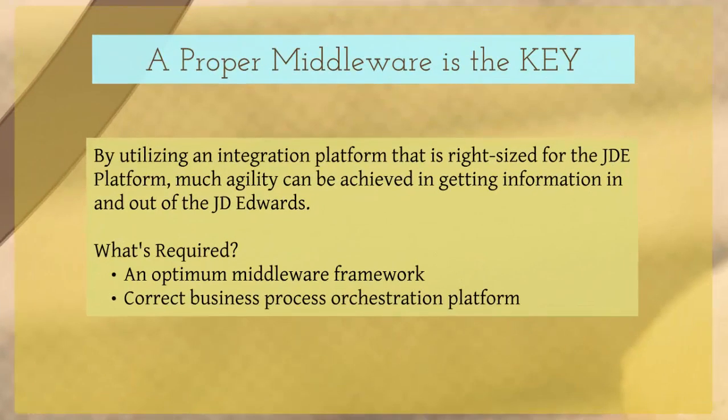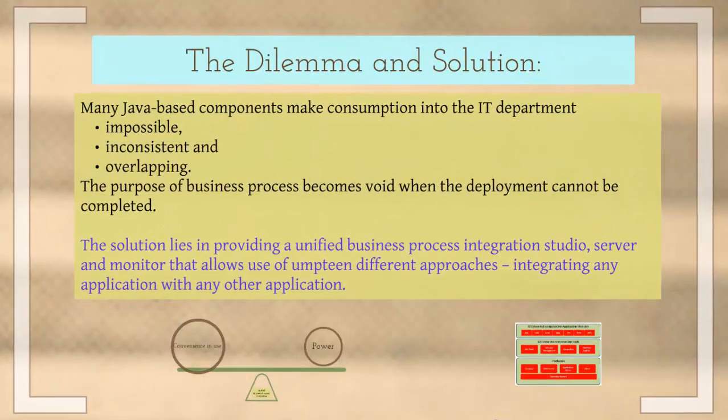By utilizing an integration platform that is right-sized for the JDE platform, much agility can be achieved in getting information in and out of JD Edwards. With an optimum middleware framework and the correct business process, the JDE can be run ranging from World to XE to Enterprise One within a service-oriented architecture by consuming and providing web services as needed. A common problem observed with middlewares that are Java-based is that its many components make consumption into the IT department impossible, inconsistent, and overlapping.